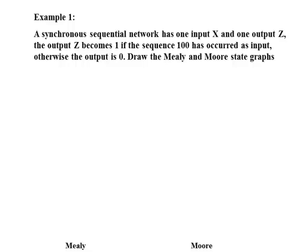Example 1. A synchronous sequential network has one input X and one output Z. The output Z becomes 1 if the sequence 1, 0, 0 has occurred as input. Otherwise the output is 0. Draw the Mealy and Moore state graphs.